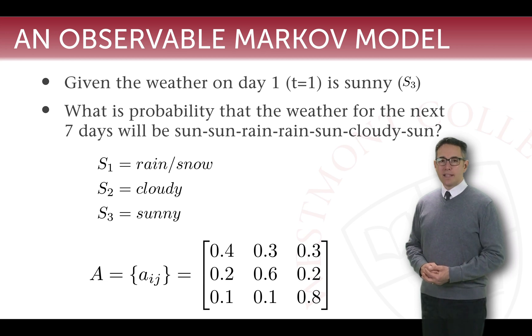Given that the weather on day one, T equals one, is sunny, S equals three, we can ask a more complicated question. What is the probability that the weather for the next seven days is going to be sun, sun, rain, rain, sun, cloudy, sun? We have our states, we have our transition probabilities, how do we figure this out?